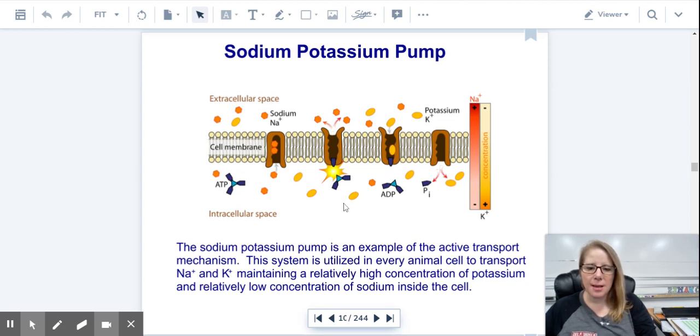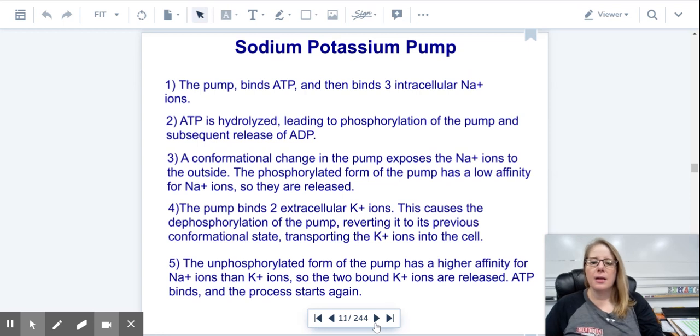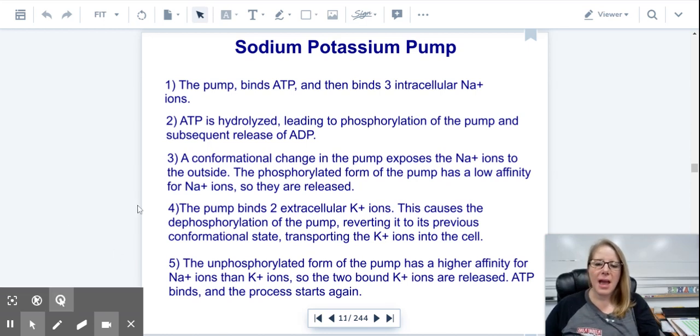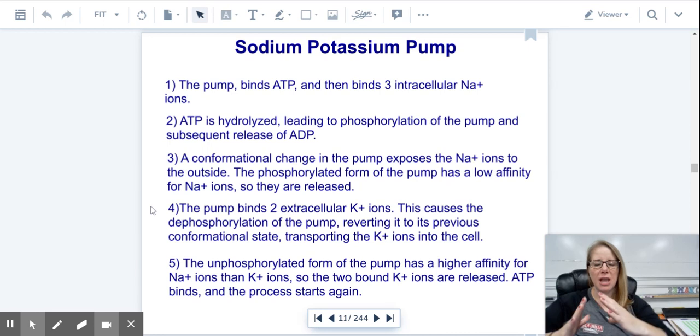They want to get potassium in, and there's usually more of a concentration on the inside, so it's still pumping in. They're going against the gradient in both cases. The pump binds to ATP. You need ATP to make it work. Then three intracellular sodium ions attach, and then ATP breaks, which is hydrolyzed. Because of that, you have now a phosphorus, so it's been phosphorylated. ADP is released, and that phosphate is there.